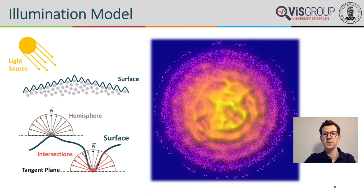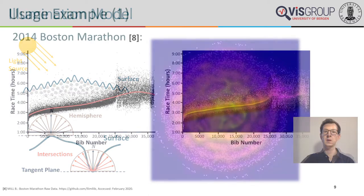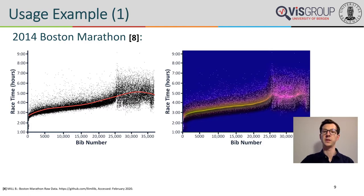I want to demonstrate the strength of sunspot plots based on three real-world datasets. The first example is a 2014 Boston Marathon dataset containing results of approximately 32,000 participants. The x-axis encodes the BIB number assigned to each participant depending on their qualification time — the faster the runner, the lower the number and the earlier the starting time. The y-axis encodes the total time in hours needed to finish the marathon. The left shows a classical scatter plot with opacity regulation and an orange polynomial trendline overlay, while the right shows the same dataset as a sunspot plot. Individual points within sparse regions are preserved, for example the wheelchair race participants with the lowest BIB numbers and finishing times between 1 and 2 hours.